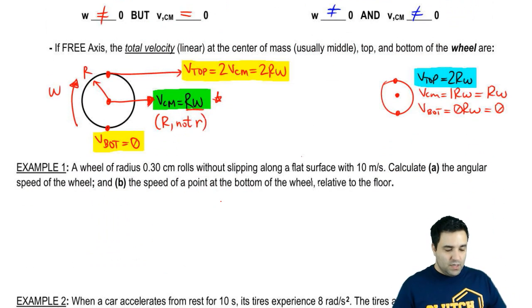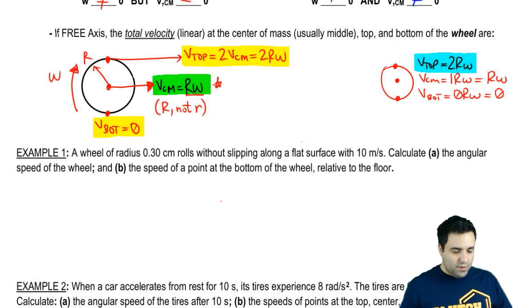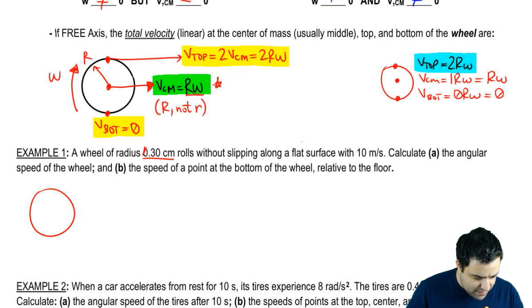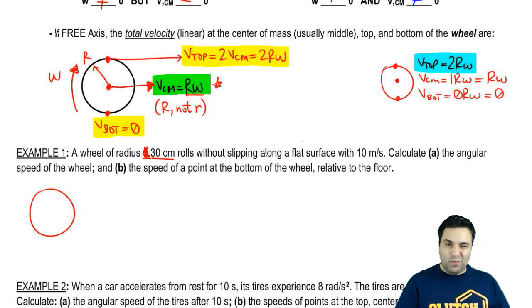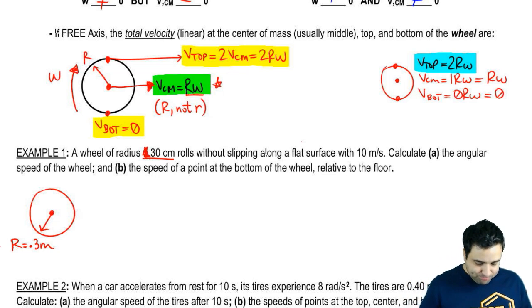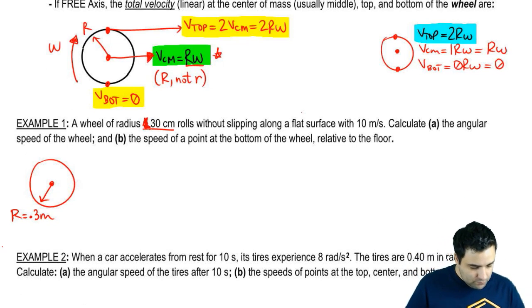All right. So I have a wheel of radius 0.30 centimeters. I actually meant to make this 30 centimeters or 0.3. Sorry about that. So I'm going to say that it has a radius of 0.3 meters. And it rolls without slipping along a flat surface with 10 meters per second.